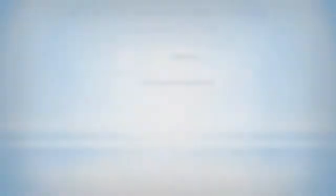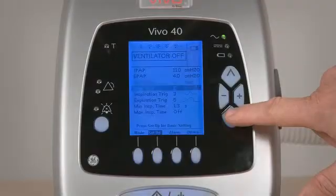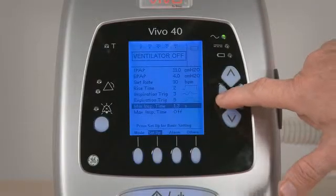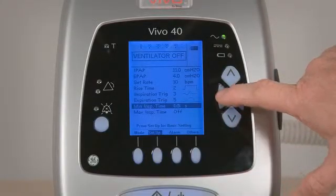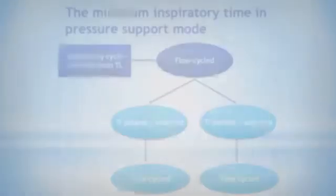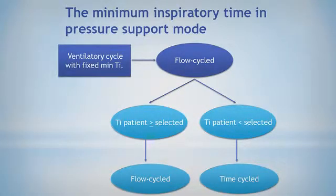Another important feature of the Vivo40 ventilator is the possibility to set in the pressure support mode a preselected minimal and maximal inspiratory time. When selecting a minimal inspiratory time, the algorithm of the ventilator operates as follows: if the inspiratory time of the patient's breath is longer than the minimum inspiratory time selected in the ventilator, breaths are flow cycled.